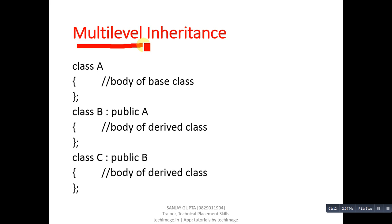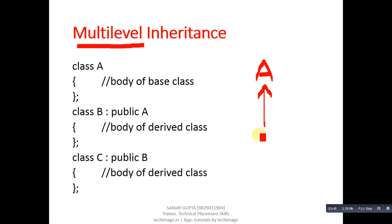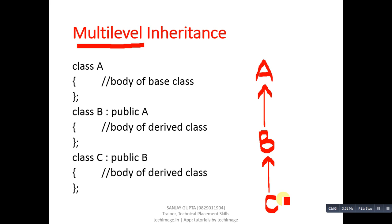The second type of inheritance is multilevel inheritance. In this example, three classes are involved: A class, B class, and C class. A class is inherited into B class, and B class is inherited into C class. At level one, A class is there; then features of A are inherited by B; then features of B are inherited by C. Features of A are available with B, and features of both A and B are available with C. B class works as both a derived class for A and a base class for C.